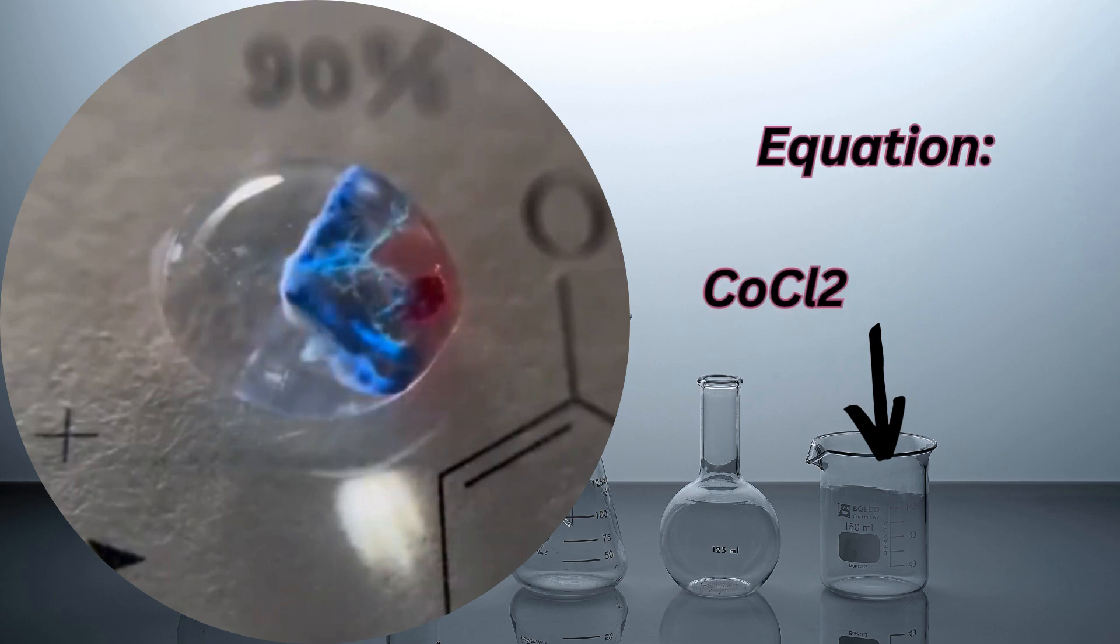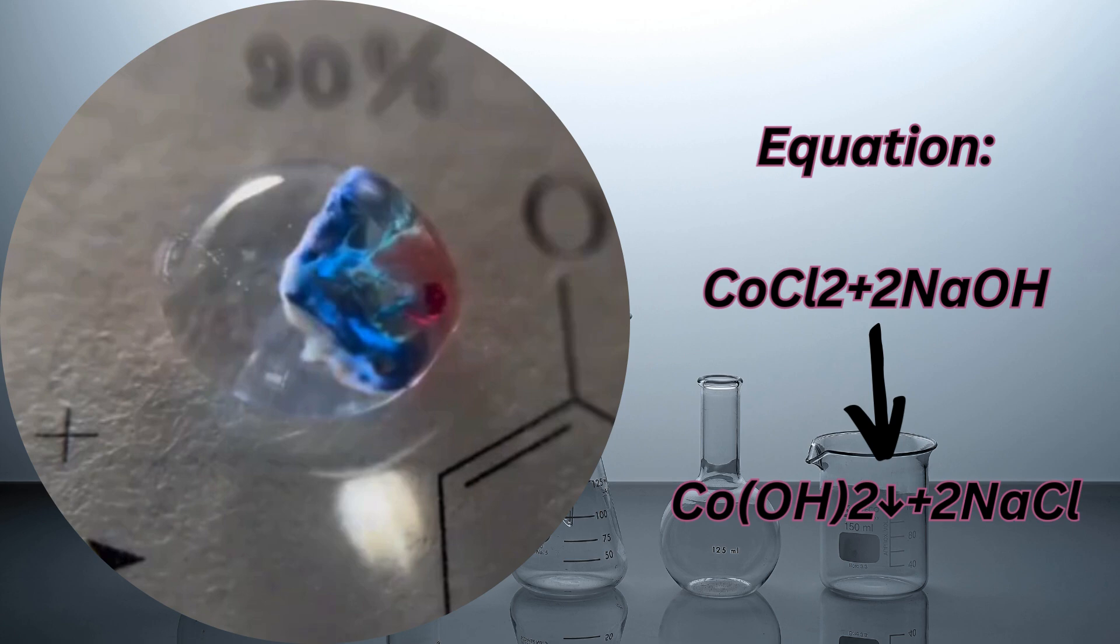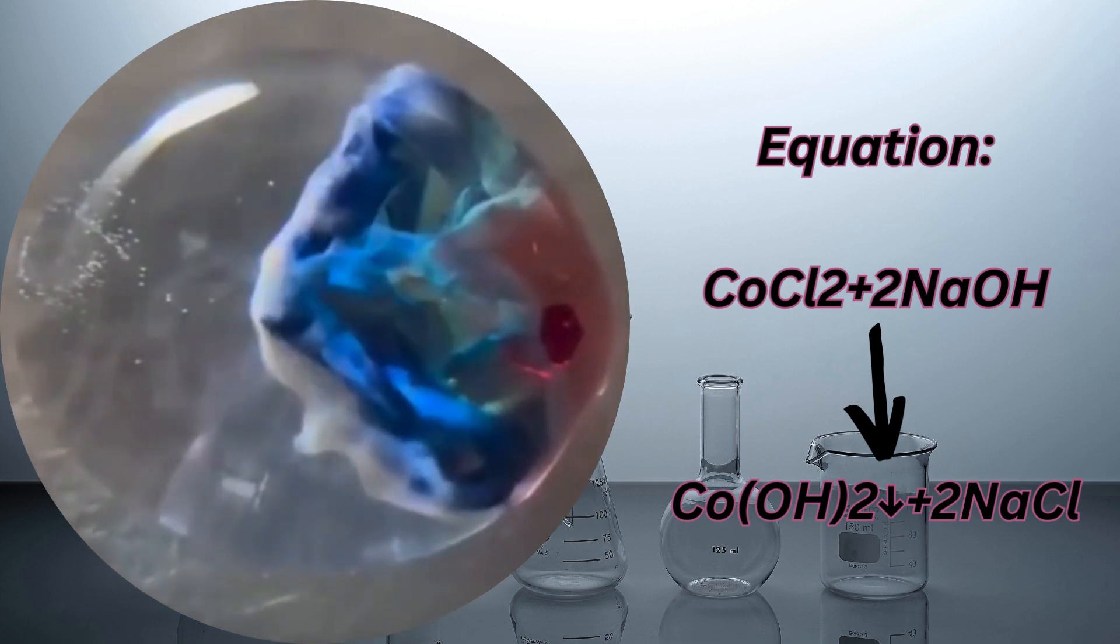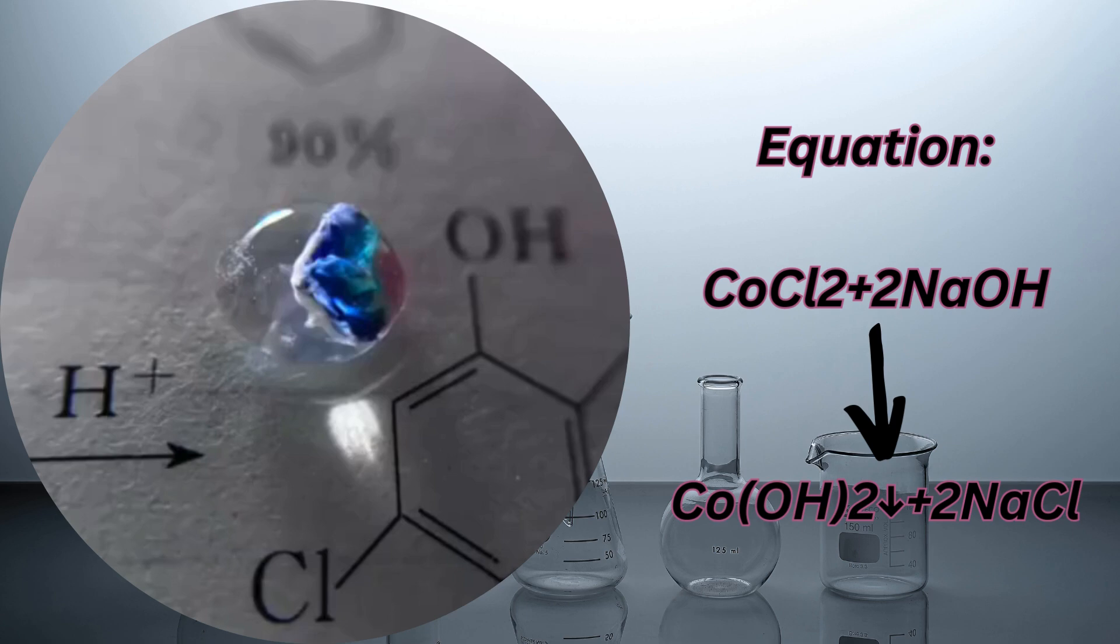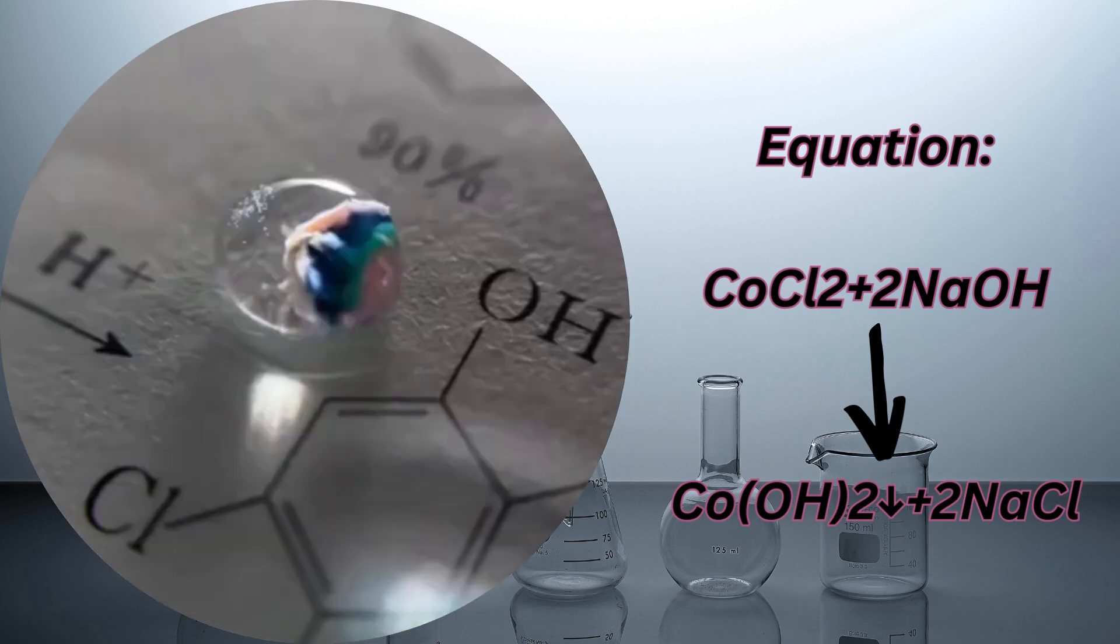Equation: One mole of CoCl2 reacts with two moles of NaOH to form one mole of pale blue Co(OH)2 precipitate and two moles of NaCl.